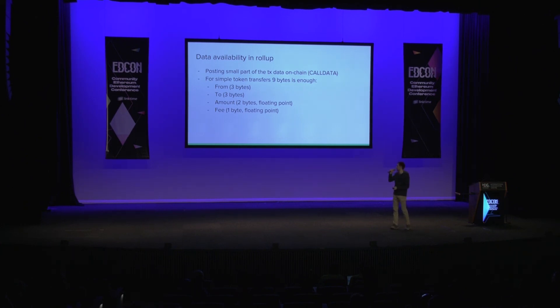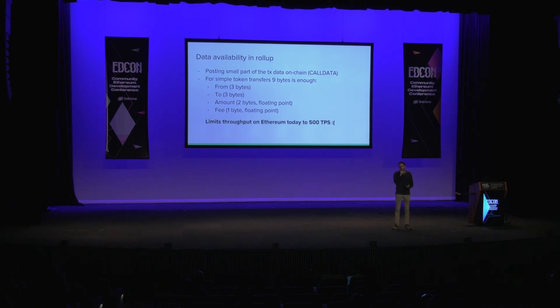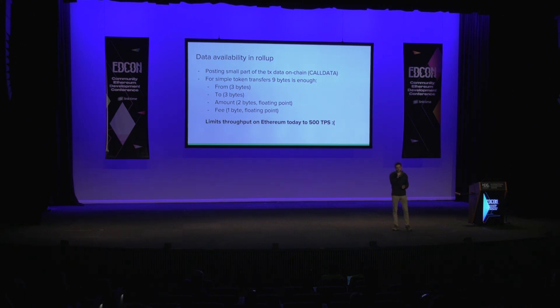A simple Ethereum transaction is 21,000 gas, and an ERC-20 token transfer is about 80,000 gas. This is how we handle data availability, which unfortunately limits us to 500 TPS for now — but that's quite good.